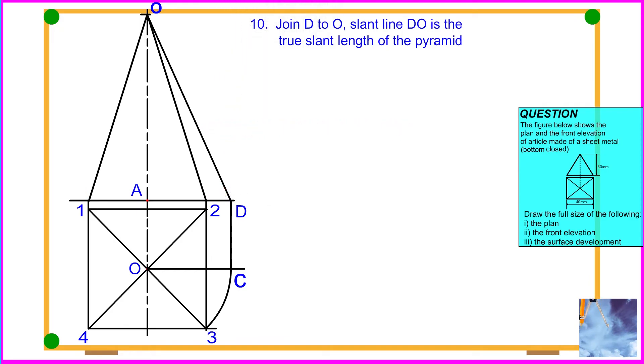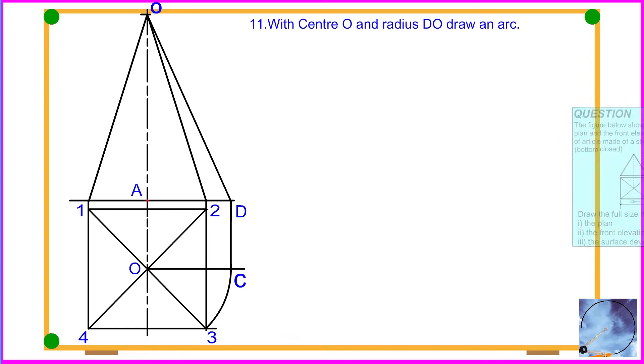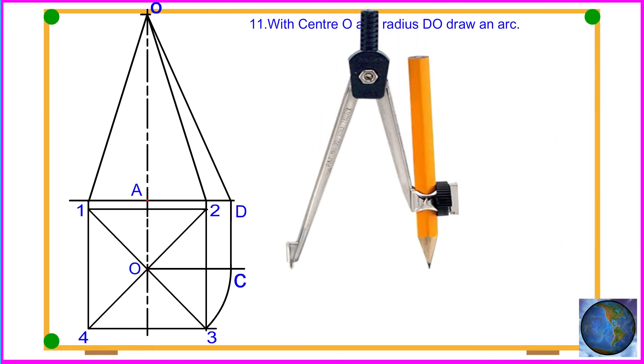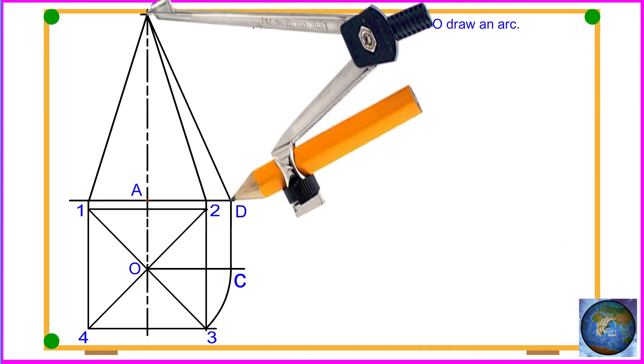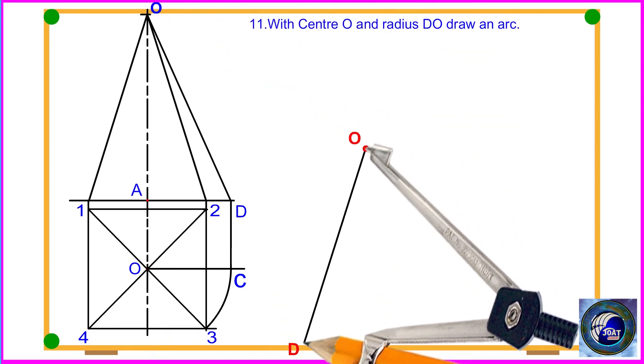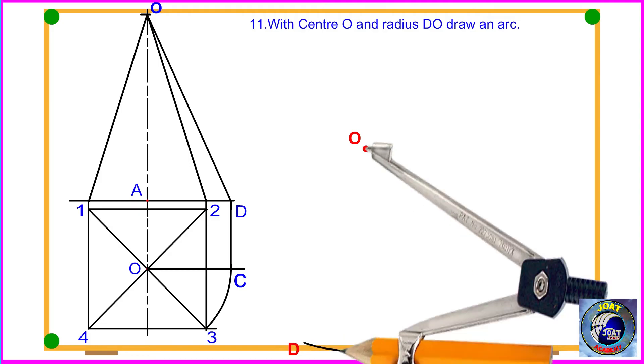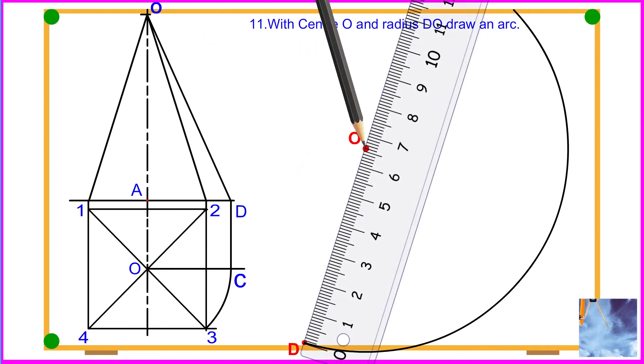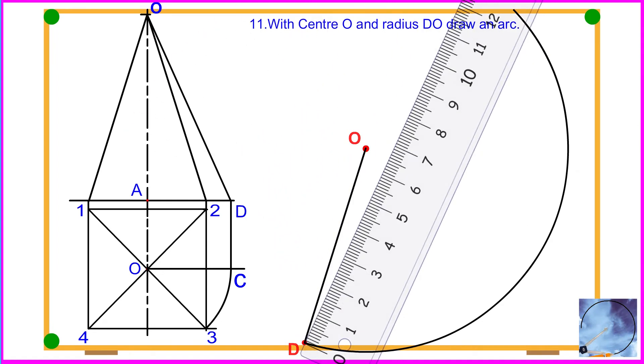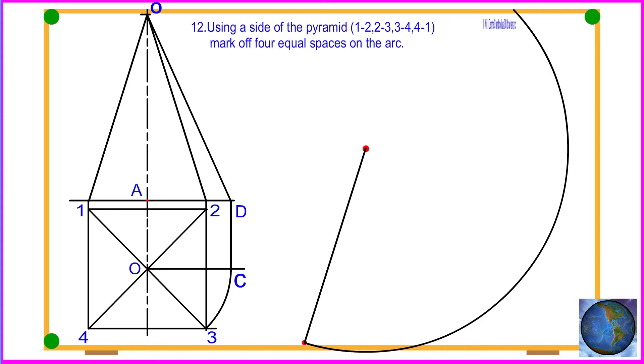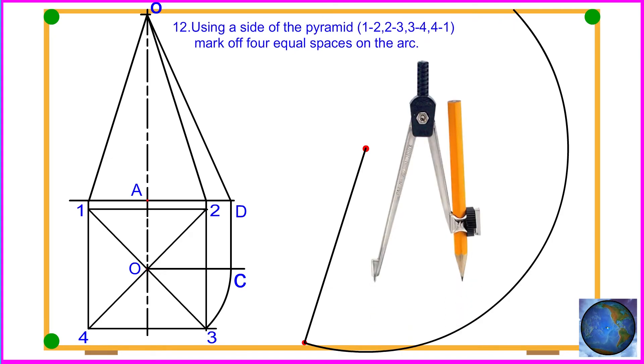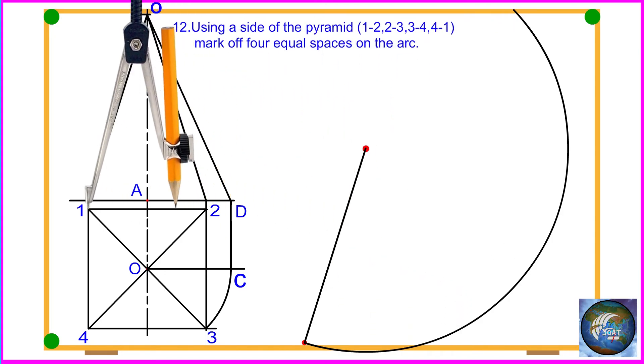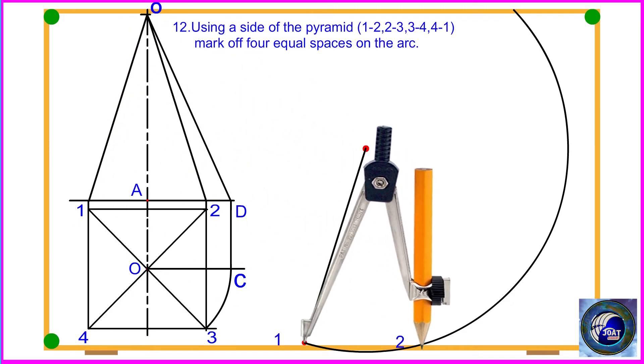Procedure 11: With center O and radius D-O, draw an arc. Procedure 10: Join points D and O. Procedure 12: Using a side of the pyramid 1-2, 2-3, 3-4, 4-1, mark off 4 equal spaces on the arc.